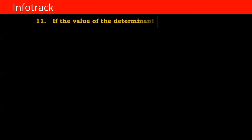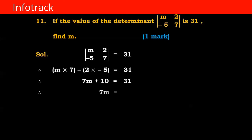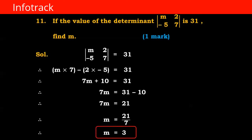If the value of the determinant with entries m, 2, minus 5, 7 is 31, find the value of m. The value of the determinant equals 31, so cross multiply: m into 7 minus 2 into minus 5 equals 31. So 7m plus 10 equals 31, therefore 7m equals 31 minus 10, which is 21. So m equals 21 upon 7, therefore m equals 3.